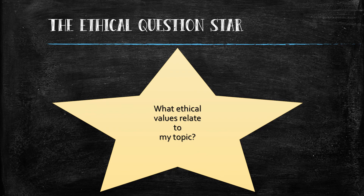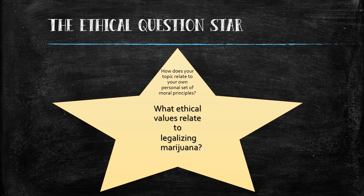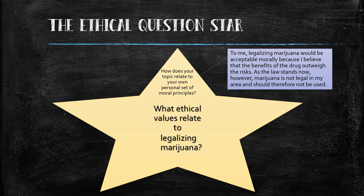The overall goal of this assignment is to answer this question: what ethical values relate to my topic? As an example, we'll go back to everyone's favorite debate — legalizing marijuana. Since we are using this as an example, I would prefer that you don't use this topic for your essay. The branches of the star are focused on answering questions about the particular types of ethics related to your topic. Let's start with personal values: how does your topic relate to your own personal set of moral principles? A possible response might look like this: to me, legalizing marijuana would be acceptable morally because I believe that the benefits of the drug outweigh the risks.